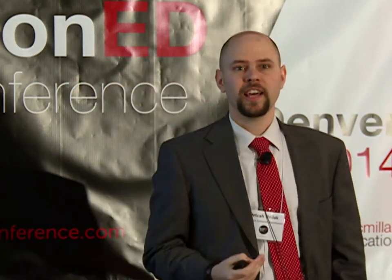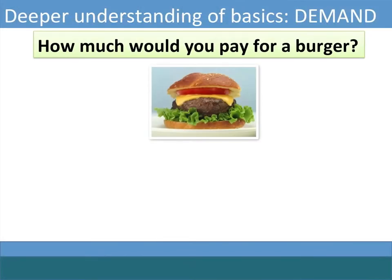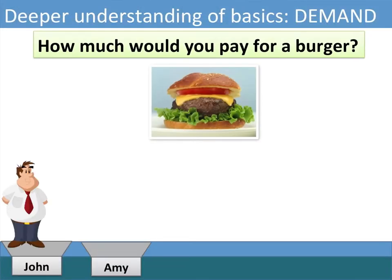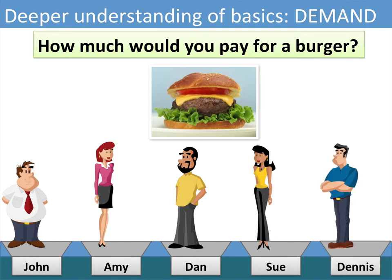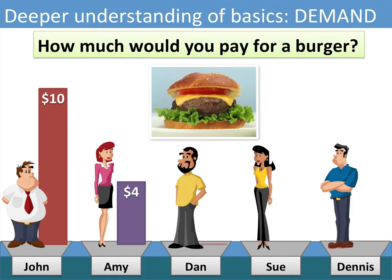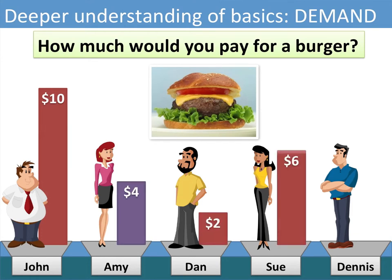I want to show a brief example of how you might introduce demand. Probably like a lot of you, when I talk about demand I bring up a good — like maybe a hamburger — and I go around the room and ask students how much they would pay for it. They all come back with different values, and we get to make fun of the meat eaters and vegetarians. Then I take five hypothetical people and put them in. The students can relate to these people because we just went around and talked about willingness to pay, and we give them different willingness-to-pay values.